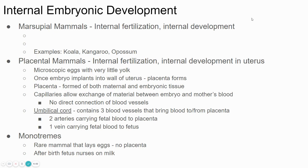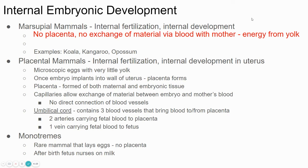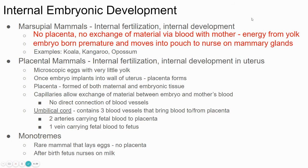Mammals, which includes humans, have what's called internal development — they don't lay eggs for the most part. The fertilized egg is kept inside, and it grows until it's ready to be born and survive on its own. Marsupials are animals that don't have a placenta. Examples include koalas and kangaroos. In marsupials, they have internal fertilization, but the fertilized egg develops into a very immature offspring, which the mother gives birth to. Then it crawls into a pouch and nurses for the rest of its development until it's ready to become independent.